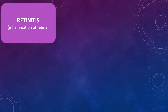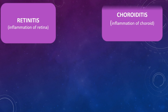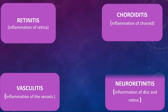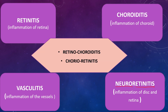When inflammation is limited to the retina, that is called retinitis. When limited to the choroid, it is called choroiditis. When inflammation is present in the vessels, it is called vasculitis. When inflammation involves the optic nerve along with the retina, it is called neuro-retinitis. These terms are not exactly exclusive — inflammation of the retina can sometimes involve the choroid as well, or vice versa, giving us the terms retinochoroiditis or chorioretinitis.